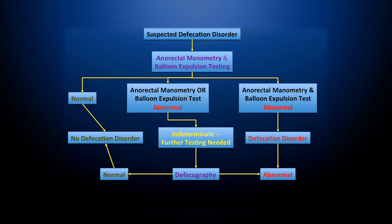This is a simple algorithm for patients who present with a suspected defecation disorder. Start off by performing a history, a physical examination, including a thorough rectal exam. But if you suspect that there's a defecation disorder or an expulsion disorder, start by performing an anorectal manometry with a balloon expulsion test. If the test is normal, there is no defecation disorder present.